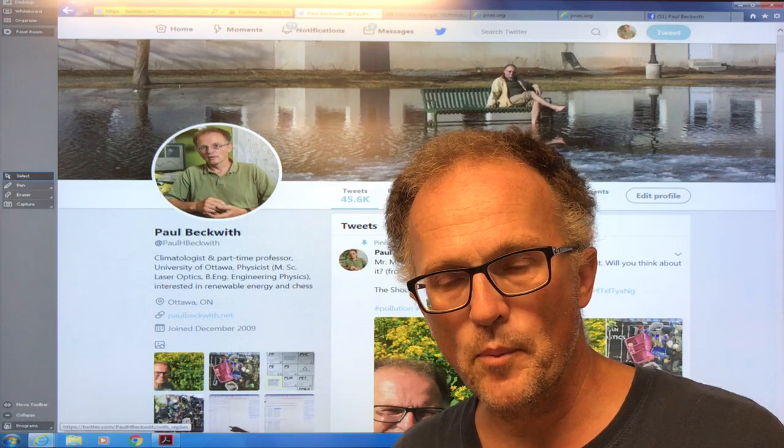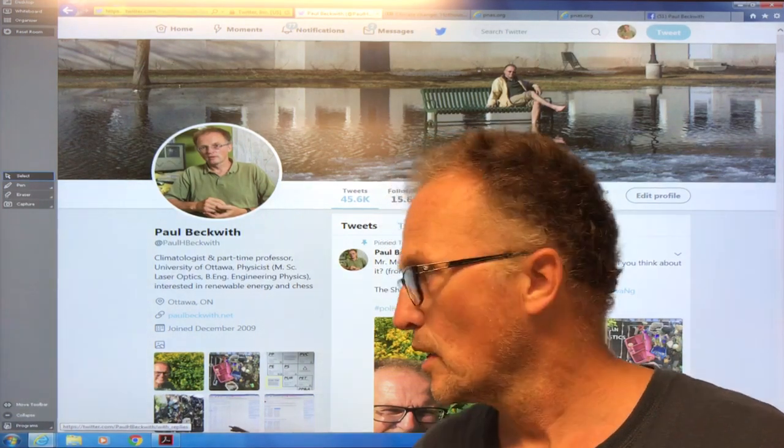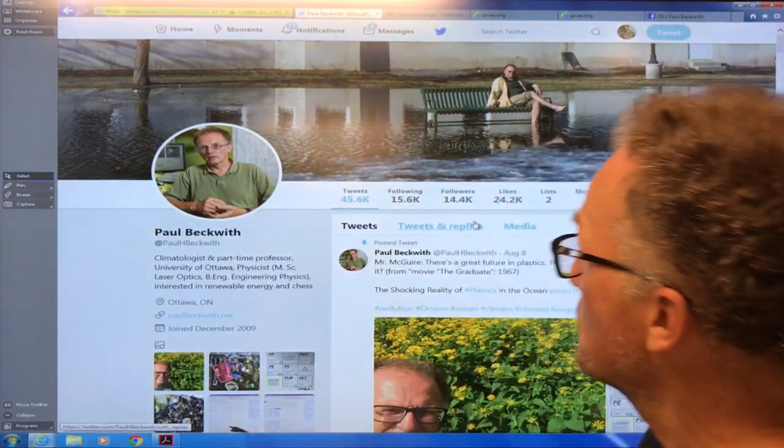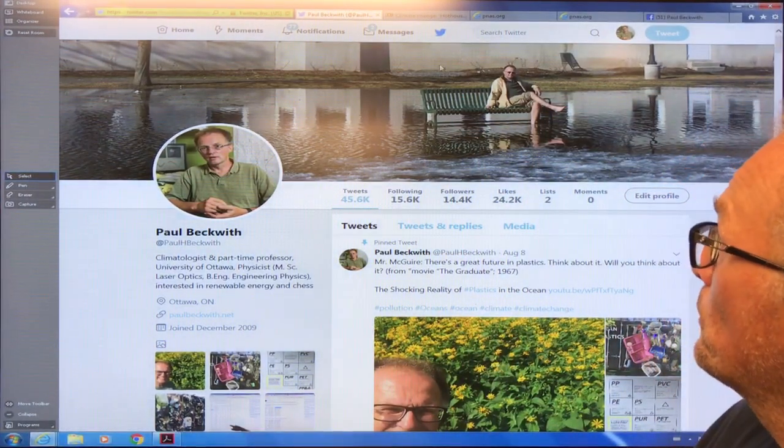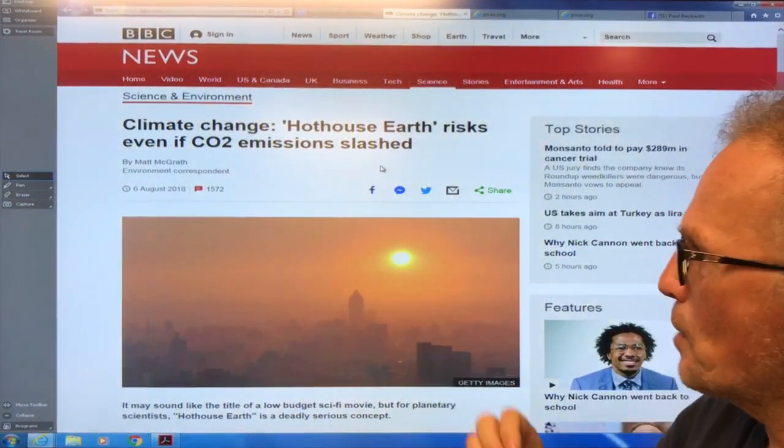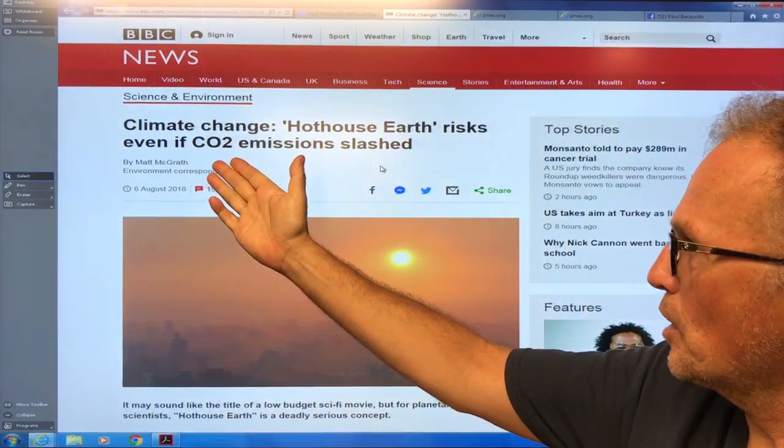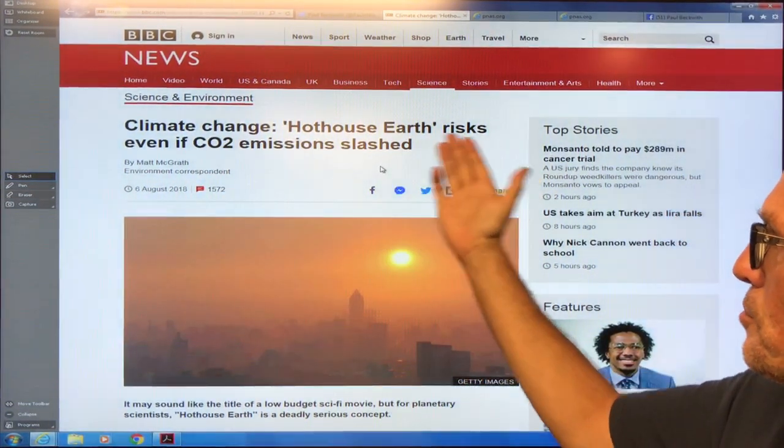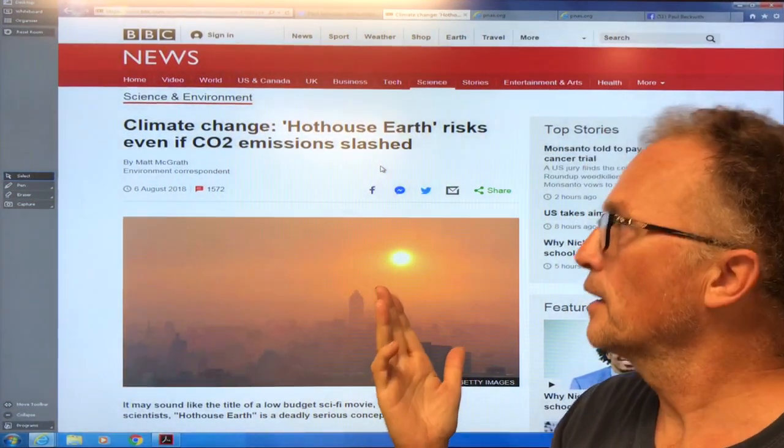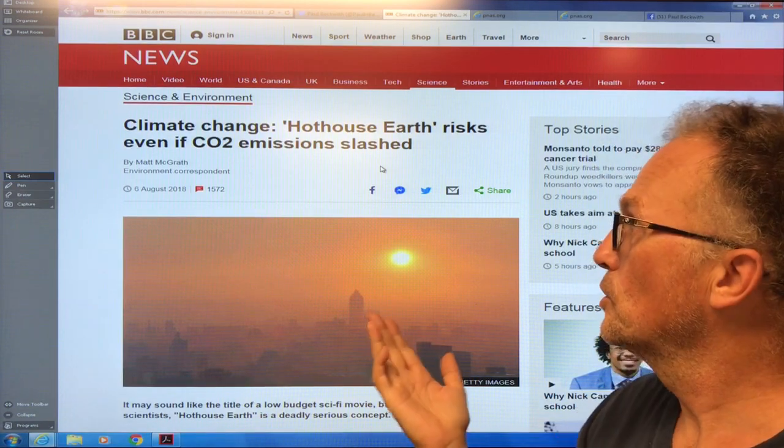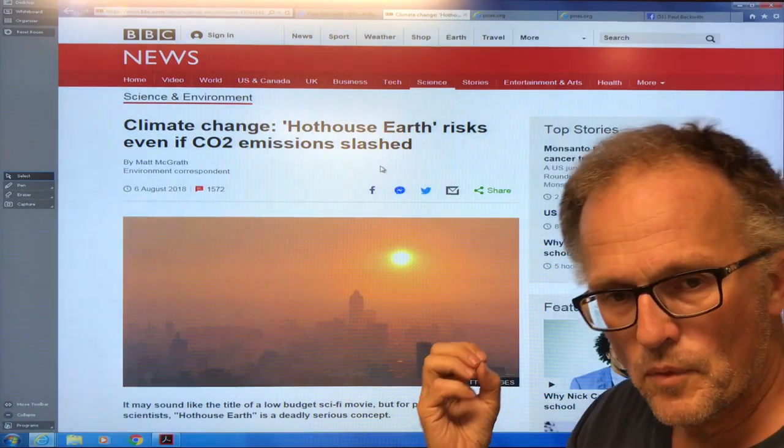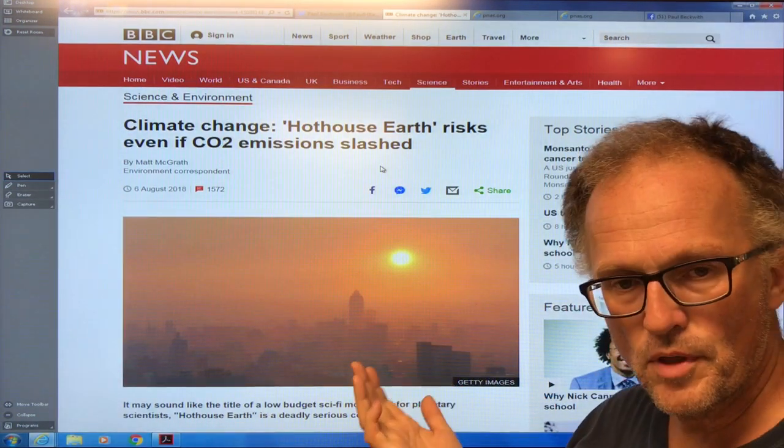But what I really want to talk about is what I think is one of the most significant papers on the overall Earth system and how we're changing. You've probably seen numerous articles: 'Climate Change Hothouse Earth Risks Even if CO2 Emissions Are Slashed.' This is looking at the idea that if we slash CO2 emissions as fast as possible, the changes to the Earth system...